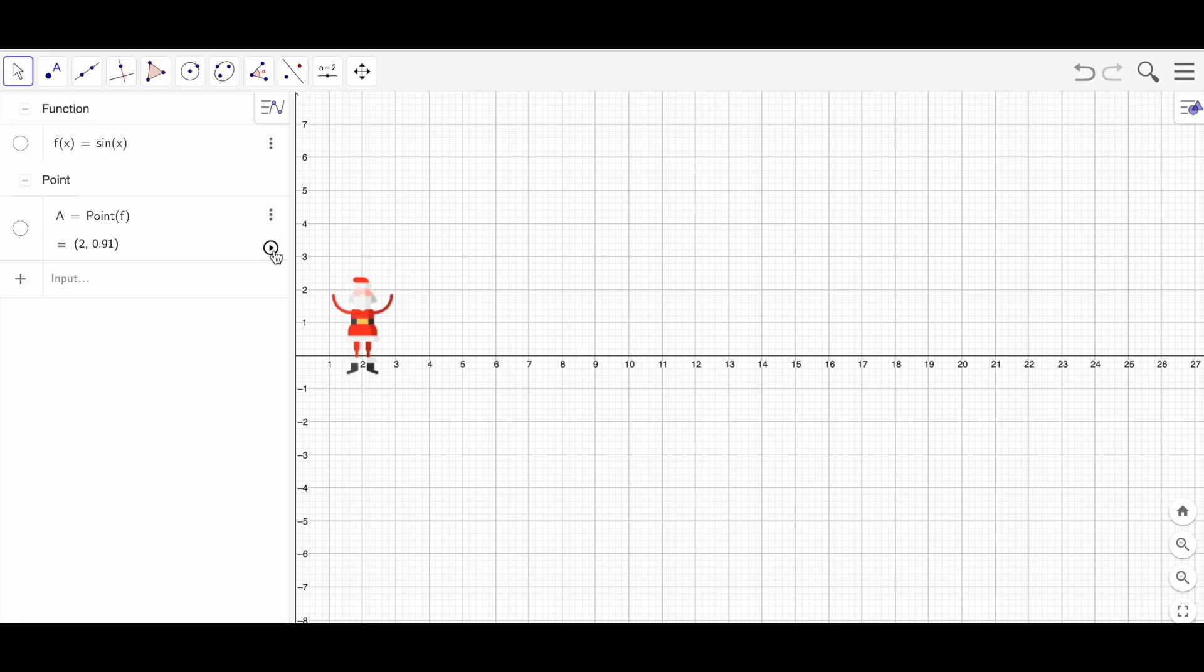What you have to do now is play the point animation. Look, so Santa will start moving along the curve. You can control it by stopping it and by changing the point if you want to change it manually. Click on the point and bring Santa back, then hide it, play again.